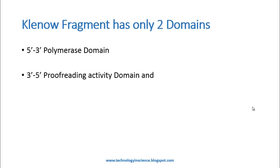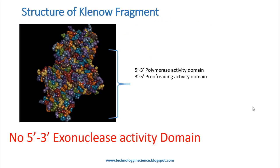The function of the polymerase domain is to synthesize a new strand or add nucleotides in the 5' to 3' direction — that is why it is called the 5' to 3' polymerase domain. The other domain is the 3' to 5' proofreading activity domain. Klenow Fragment is the deleted product of DNA polymerase, where the exonuclease domain has been removed by proteolytic cleavage. So it has two activity domains — the polymerase activity domain and the proofreading activity domain — but it lacks the exonuclease activity domain.